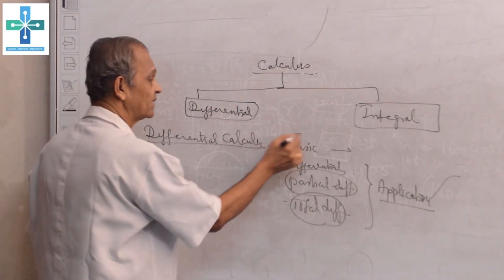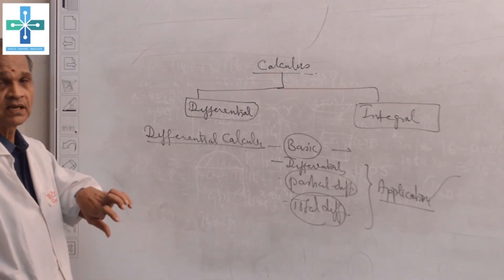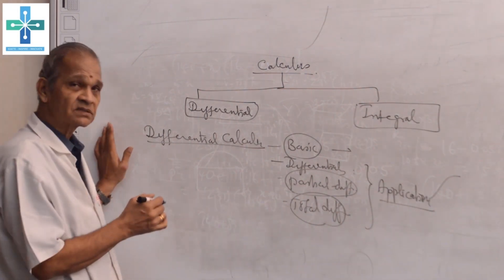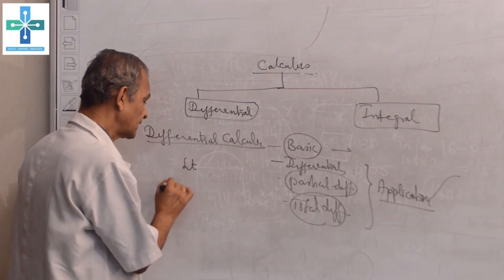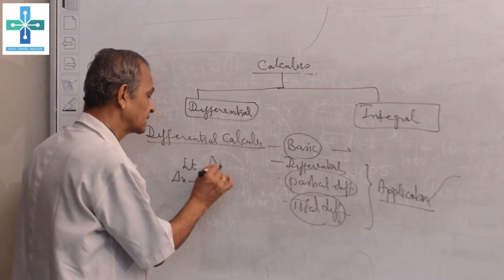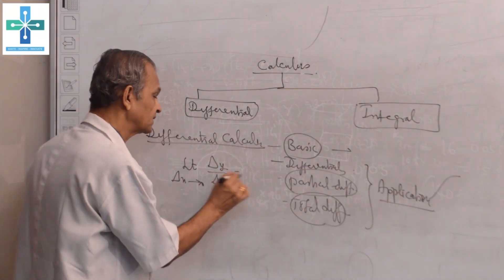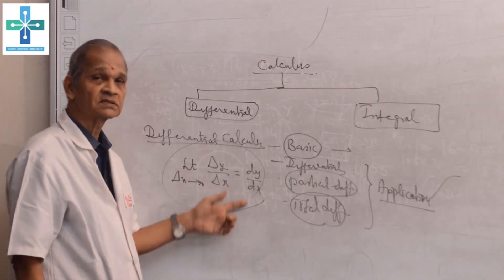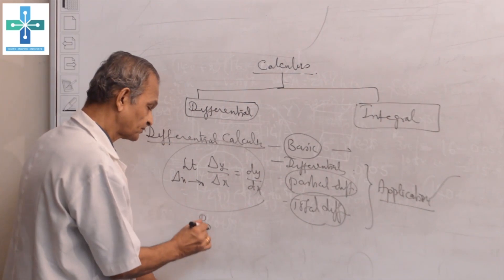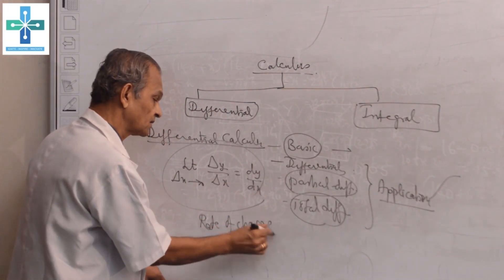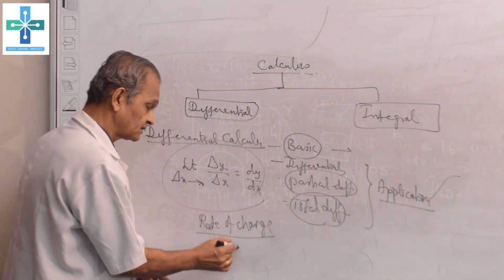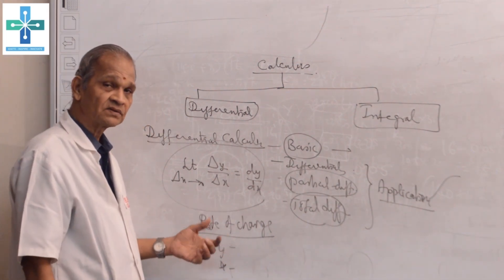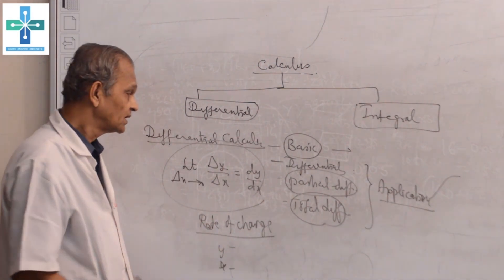Now we just think about the basic part — how we are going to enter into the subject. Calculus is mainly based on limits. Limit as delta x tends to 0, delta y by delta x is called dy by dx. This is what we call the rate of change of y with respect to x. This y is called the dependent variable and x is called the independent variable. We always differentiate with respect to the independent variable only.